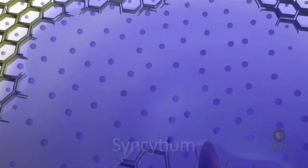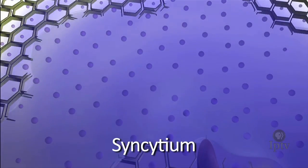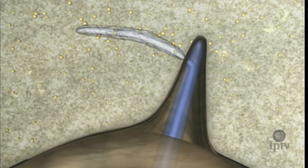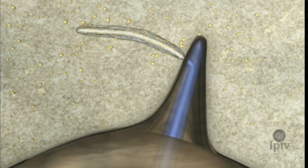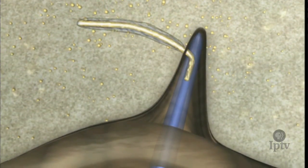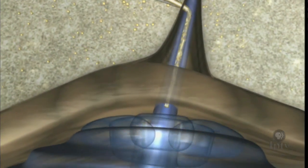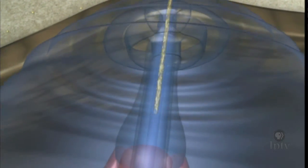This is called the syncytium, and it serves to provide food for the growing nematode. The nematode has successfully altered these soybean root cells so that they now deliver the nutrients from the leaves, where photosynthesis takes place, directly to the nematode.